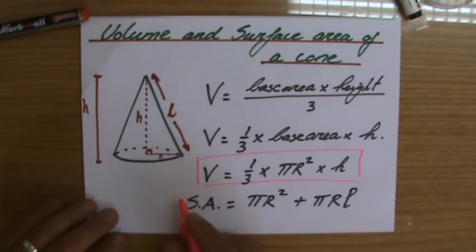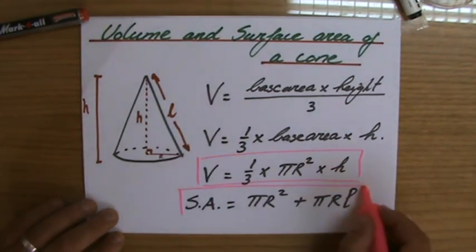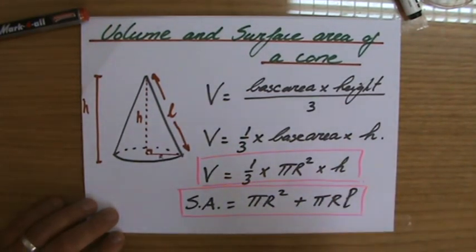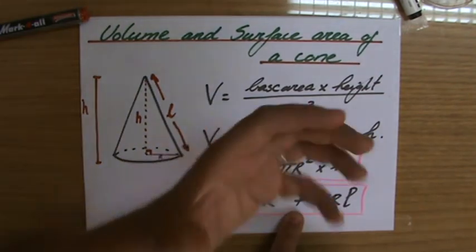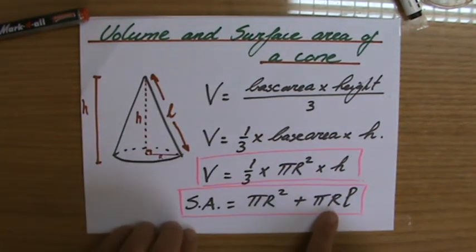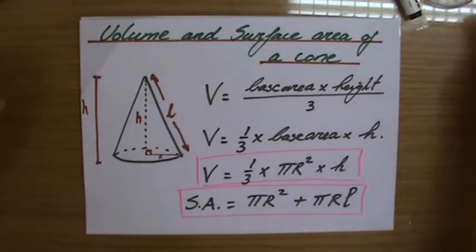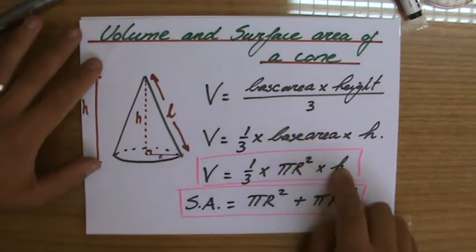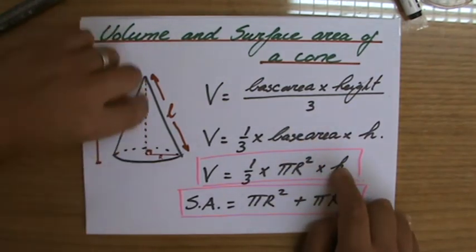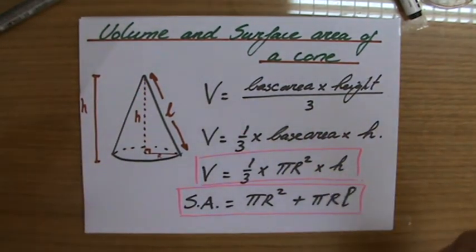Where the volume is a third times pi r squared, base area, times the height which is the perpendicular height. Okay, now let's try a few questions together. I'm sure you will do excellent. I'll see you with example questions.